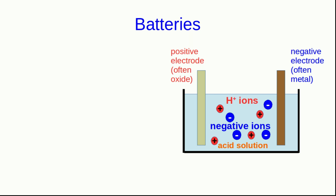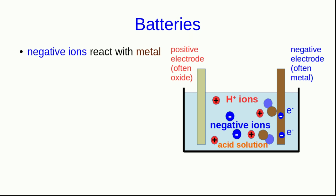Quite typically, but not always, that's an acid solution. The positive electrode is some oxide which is easily reduced. The negative electrode is usually a metal. What happens is that the negative ions react with the metal. As they do so, they leave their excess negative charge in the form of free electrons behind in the metal.